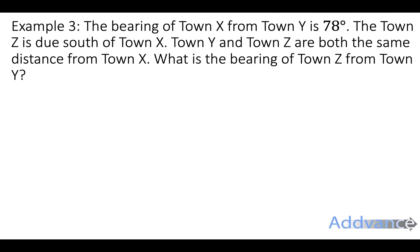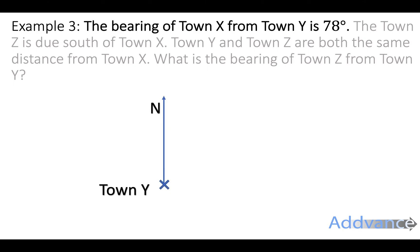Now our final example is: the bearing of town X from town Y is 78 degrees. The town Z is true south of town X. Town Y and town Z are both the same distance from town X. What is the bearing of town Z from town Y? That's a lot of words. I'm going to break that down slowly. So the first sentence says, the bearing of town X from town Y is 78 degrees. So let's draw that. So we've got town Y here, and we're going to draw a bearing of 78 degrees like this. And here is town X. The first sentence is sorted.